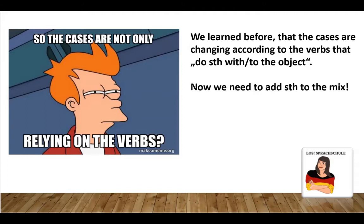We learned before that the cases, which are for now accusative and dative, are changing according to the verbs that do something with or to the object. For example, we say in English, I call him. We don't say I call he. This is just one example to make it easier to visualize this kind of grammar. But now we have to add another information to the mix, because not only the verbs are important for deciding if we use dative or accusative, but something else. Let's check it out.